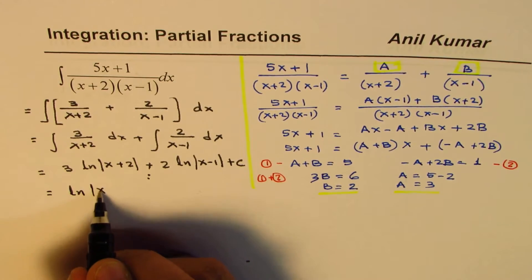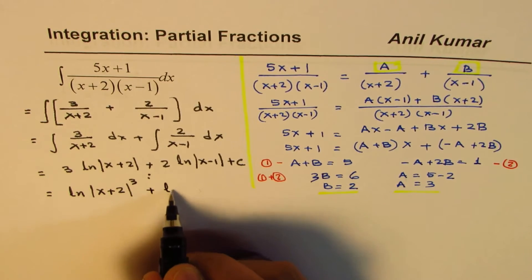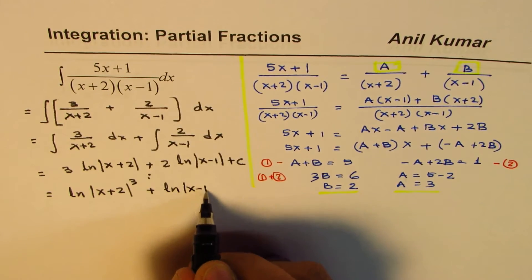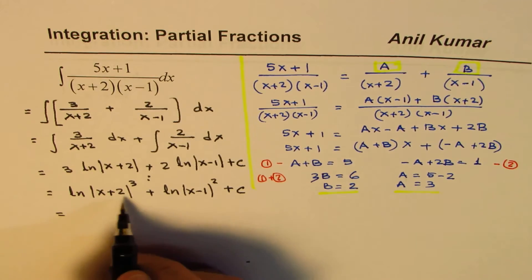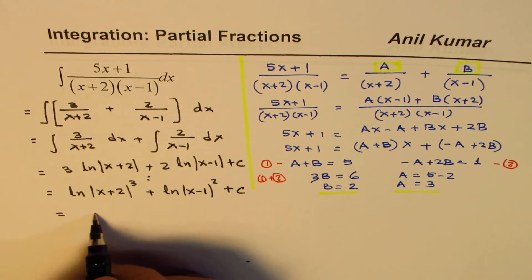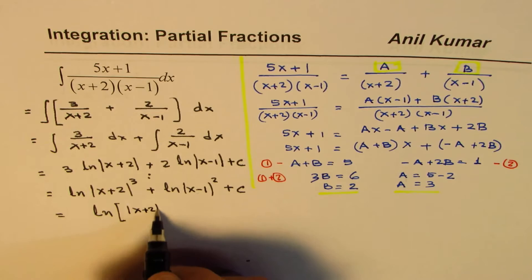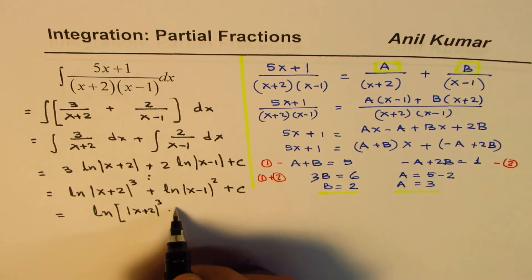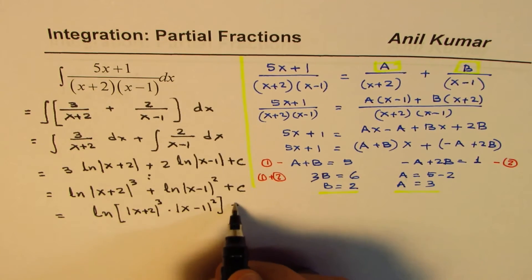We have ln, x plus 2 whole cube, plus ln, x minus 1 whole square, plus c. And then you could actually, because they are getting multiplied, you could also write this as ln, absolute value of x plus 2 whole cube, times x minus 1 whole square, plus c.